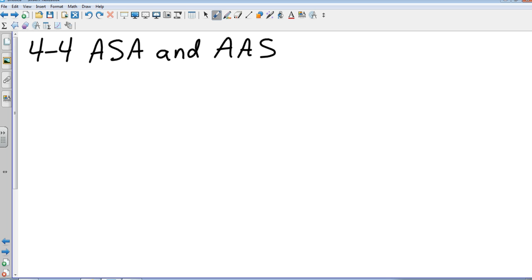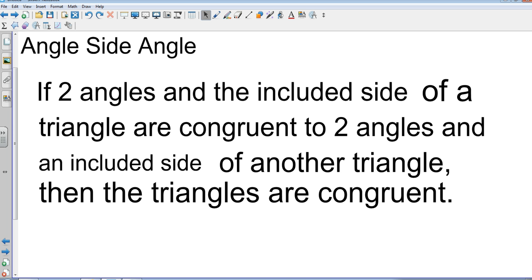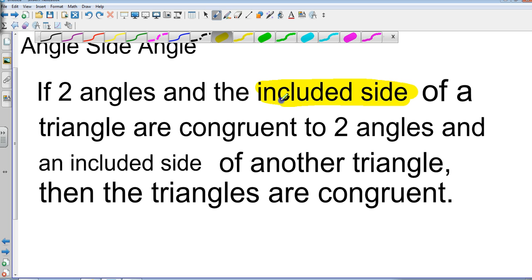Here's my definition of Angle Side Angle. If two angles and the included side of a triangle are congruent to two angles and an included side of another triangle, then the triangles are congruent. Again, keyword here is going to be included side. Included side, very important, just like yesterday, that they'll be between the angles.